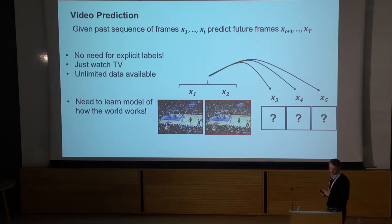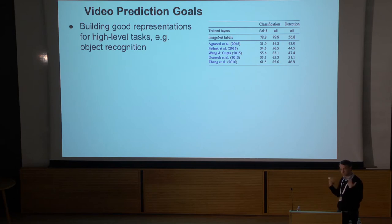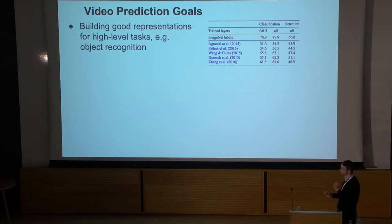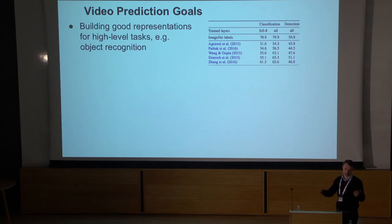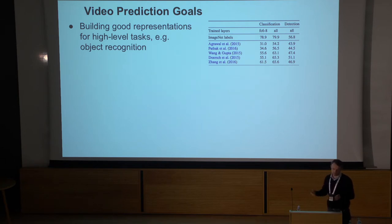To motivate why this might be a good approach to unsupervised learning: if you can make predictions correctly, maybe in the depths of the model there are high-level representations needed to make accurate predictions of the future that could also be useful for other tasks like object recognition and classification. In the self-supervised learning community there are approaches to training representations using unsupervised mechanisms and comparing them to supervised pre-training from ImageNet — they typically don't do quite as well, but still do something pretty reasonable.